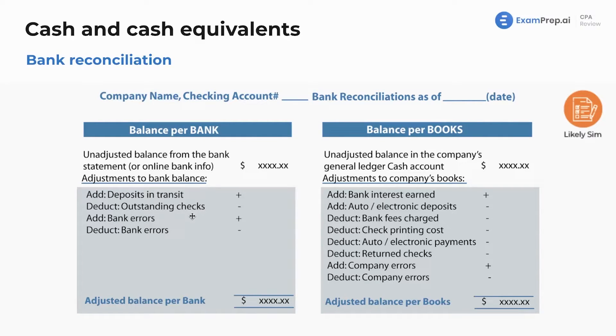It's all about knowledge. And then bank errors — those are just going to be add or subtract. Just like on the books side we've got company errors — add or subtract. Those are pretty straightforward.